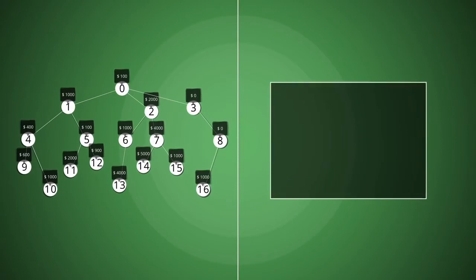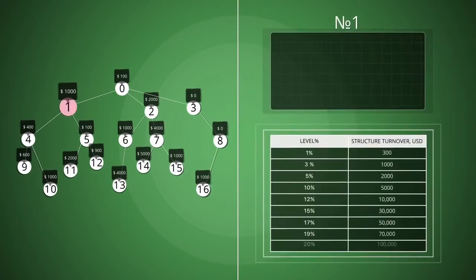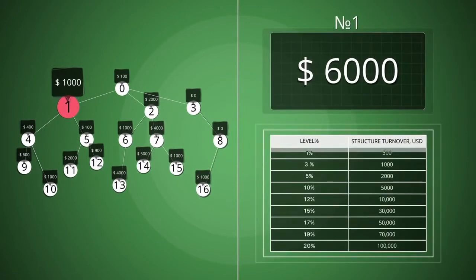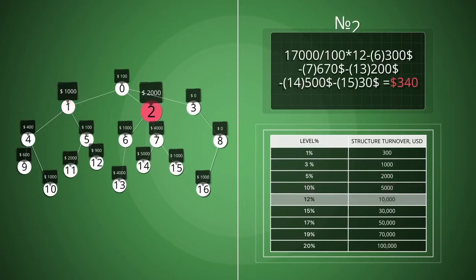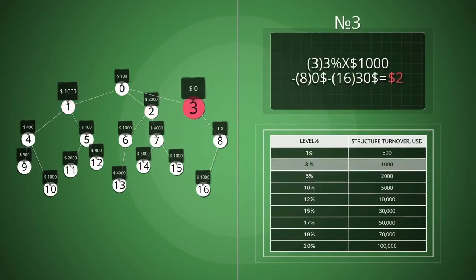Weekly group turnover together with personal deposit of number 1 amounted to $6,000. According to the table, this is 10%. Number 1 has $350 as a bonus. Number 2 has $340. Number 3, zero.